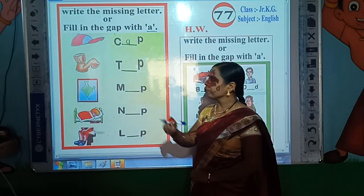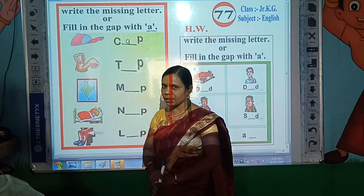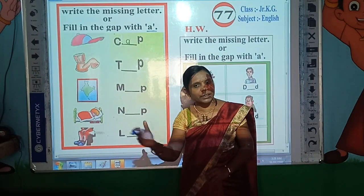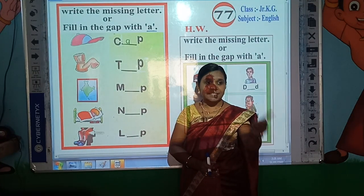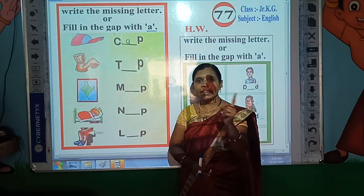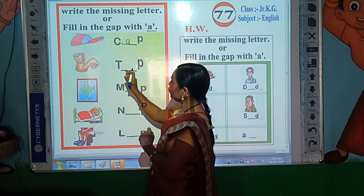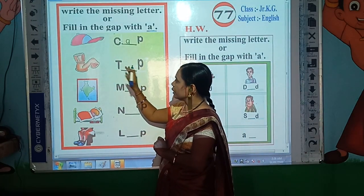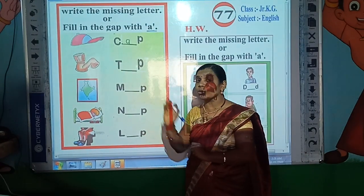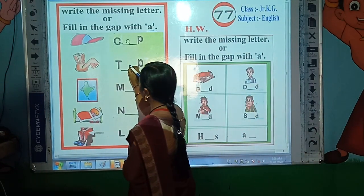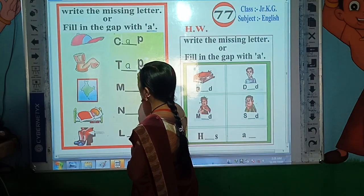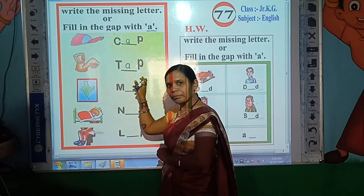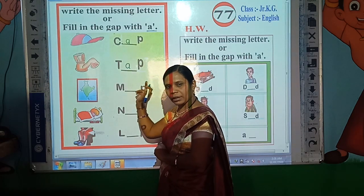Now look here — which picture is this? Correct. This is the picture of tap. Now look at the spelling of tap: T-A-P, tap. Now look here: T-P. Here also, A is the missing letter, so write A here. T-A-P, tap.